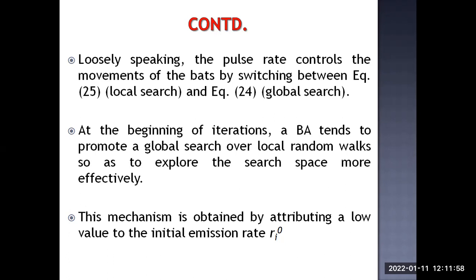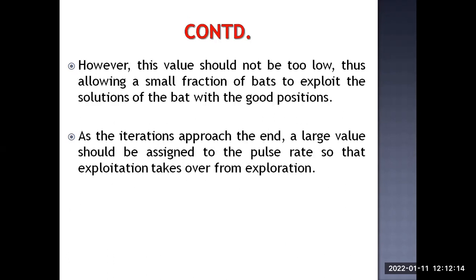This global search mechanism is obtained by attributing a low value of initial emission rate R_i0. When the bat is closer to the prey, the pulse emission rate becomes very high. However, this initial value should not be too low, as it allows a small fraction of bats to exploit solutions from bats in good positions. As iterations approach the end, a large value should be assigned to the pulse rate so that exploitation takes over from exploration.